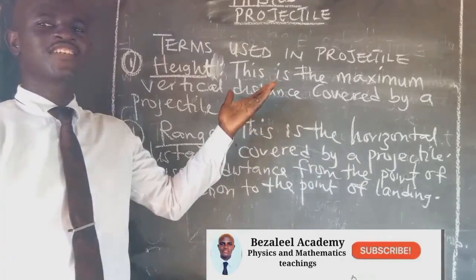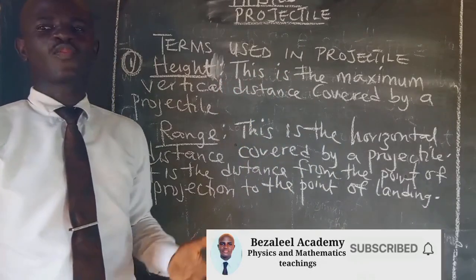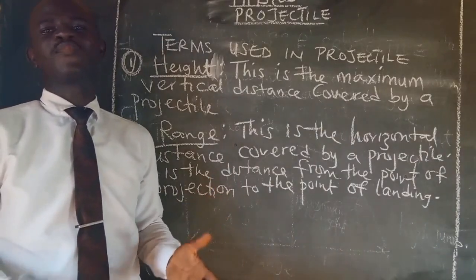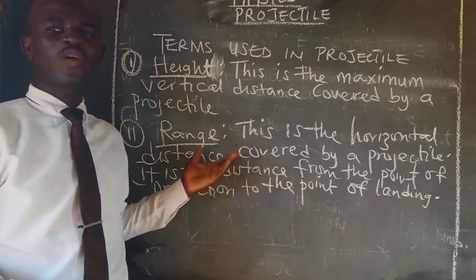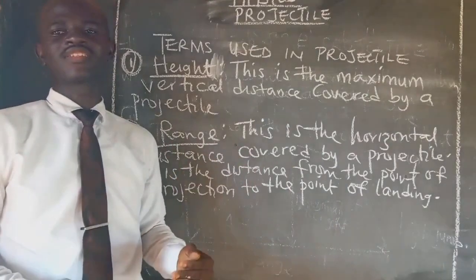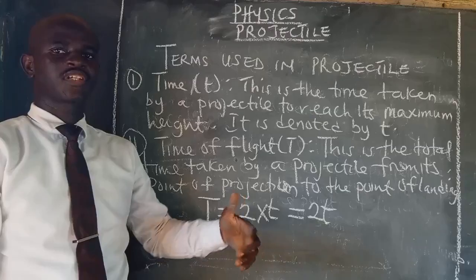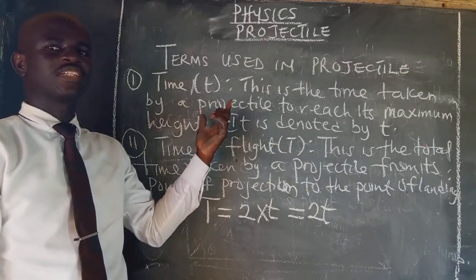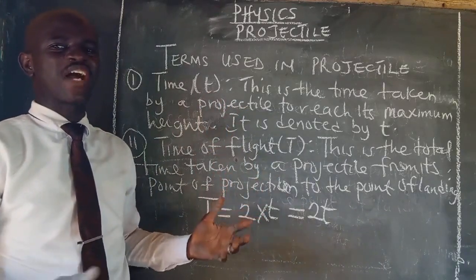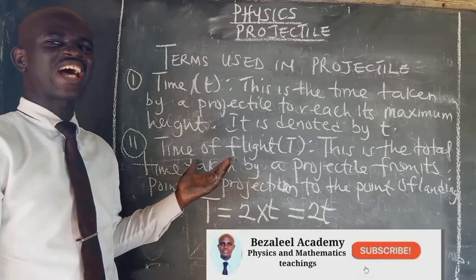We want to see the terms used in projectile. Number one is height. What is the meaning of height? It is the maximum vertical distance covered by a projectile. Another term is range, which simply means the horizontal distance covered from the point of projection to where the projectile lands.